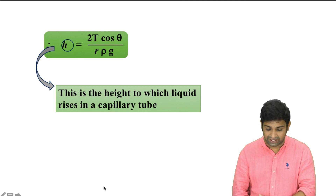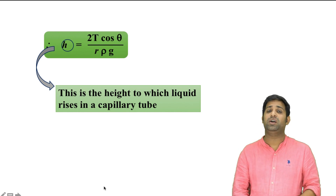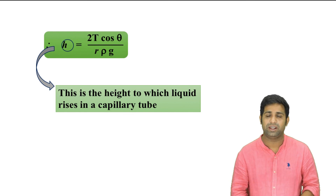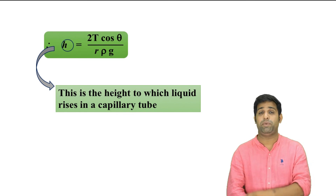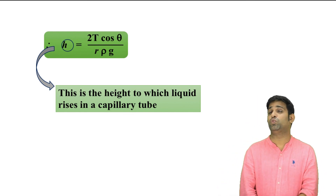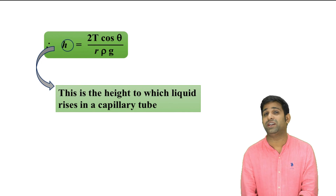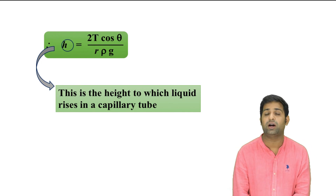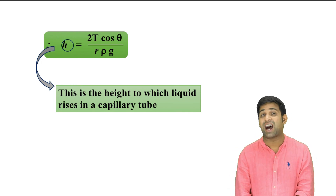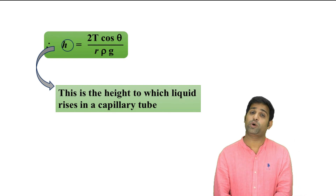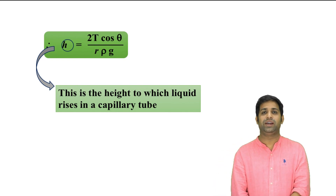This is the height of the liquid column which the liquid has attained in a capillary. The formula is: h = 2T cos theta / (R × ρ × g). I hope this is very clear. Thank you very much.